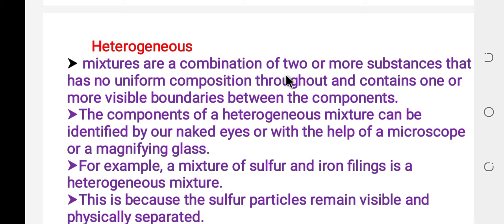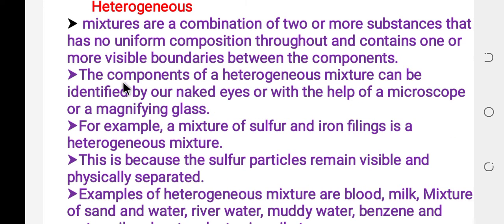Heterogeneous mixtures are a combination of two or more substances that has no uniform composition throughout and contain one or more visible boundaries between the components. The components of a heterogeneous mixture can be identified by the naked eye, or with the help of a microscope or magnifying glass.